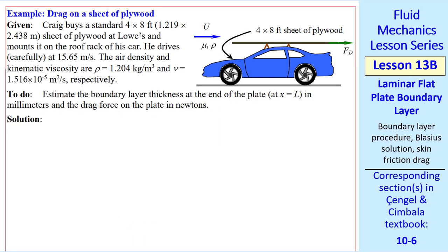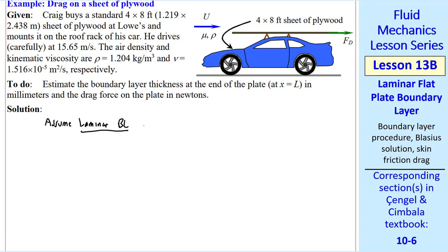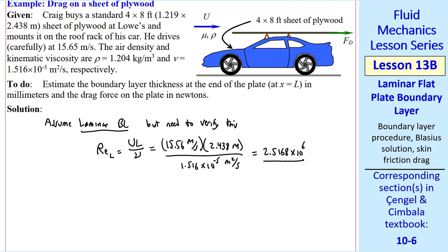Now I'll do a quick example problem. Craig puts a standard 4 by 8 foot sheet of plywood on his roof rack. I convert it to metric. He drives at this speed, and I give the air density and kinematic viscosity. We want to estimate the boundary layer thickness at the end of the plate and the drag force on the plate. We'll assume a laminar boundary layer, but we need to verify this. We calculate the Reynolds number at the end of the plate, U times L over nu, which gives 2.5168 times 10 to the sixth.